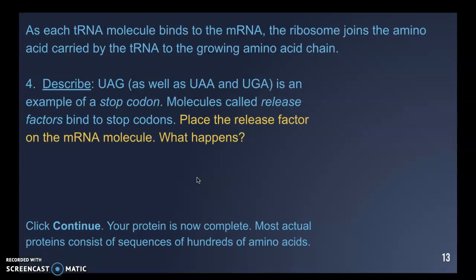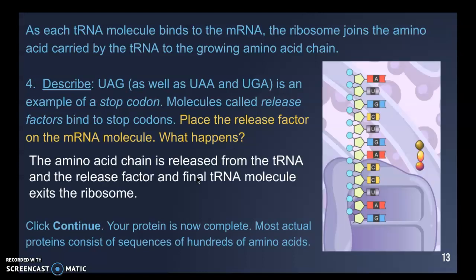Number four describes stop codons: AUG is the start codon, while U-A-A and U-G-A are examples of stop codons. Molecules called release factors bind to stop codons. When the release factor is placed on the mRNA molecule, the amino acid chain is released from the tRNAs. This chain of amino acids can then bend and fold to form the specific protein your body needs and go wherever it is required.